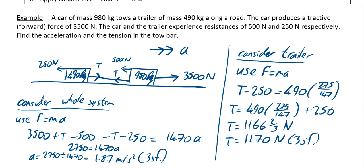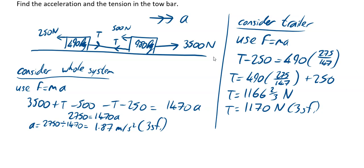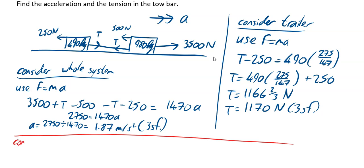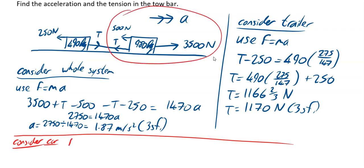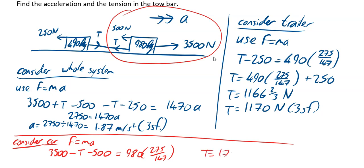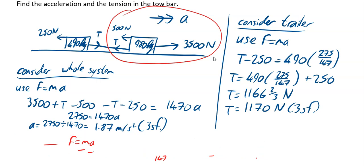Alternatively, you could consider the car instead of the trailer. Using F = ma on the car: 3500 − T − 500 = 980 × (275/147). Solving this also gives T = 1170 N to 3 significant figures — confirming the same answer either way.